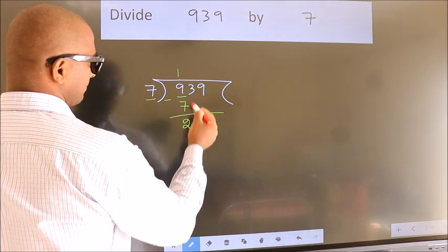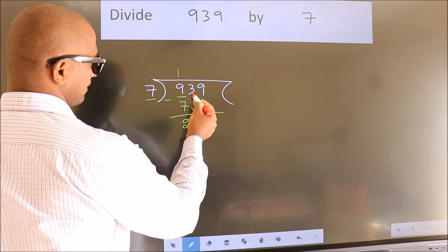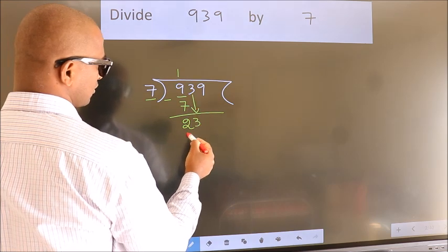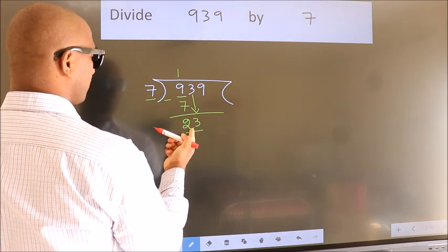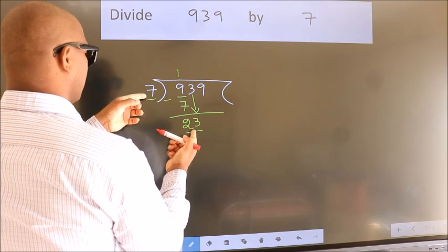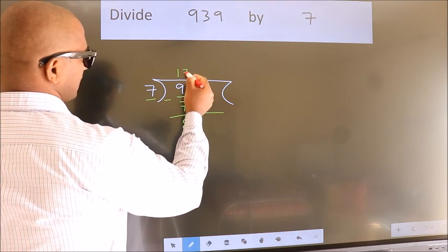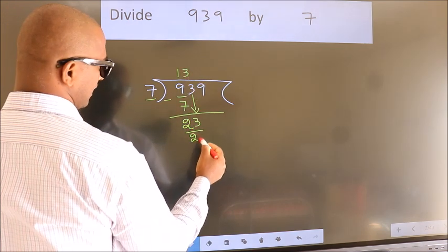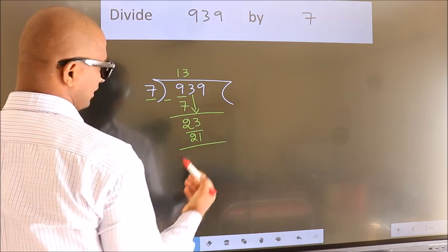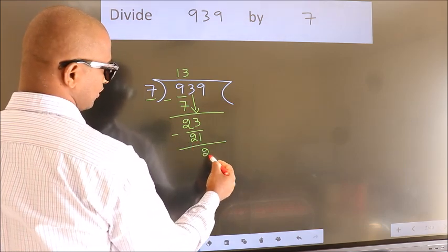After this, bring down the beside number. So, 3 down. So, 23. A number close to 23 in the 7 table is 3 times 7, which is 21. Now we subtract. We get 2.